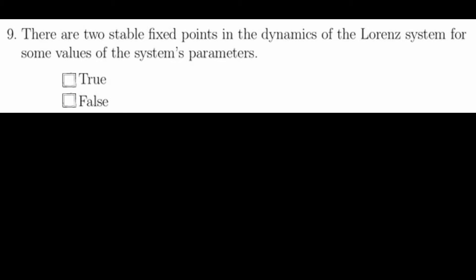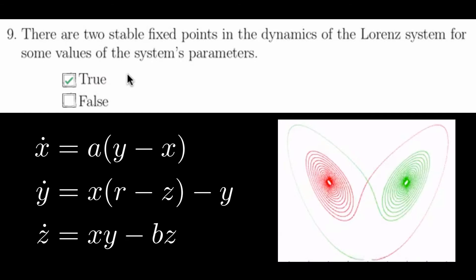Question nine asks, there are two stable fixed points in the dynamics of the Lorenz system for some value of the system parameters. This question is true. For example, consider this picture, which has r less than approximately 25, a equals 16, and b equals 4.